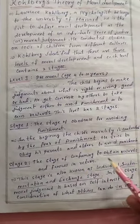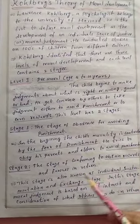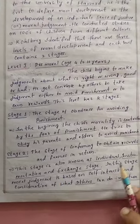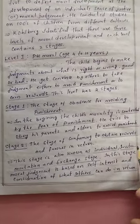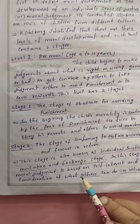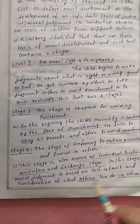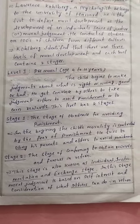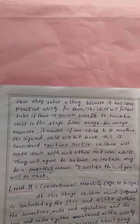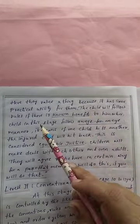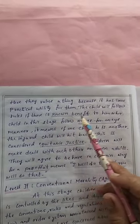Stage 2 is the stage of conforming to obtain rewards and favors. This stage is also known as the individual instrumentation and exchange stage. In this stage, moral judgment is based on self-interest and consideration of what others can do in return. The child values a thing because it has some practical utility for them.